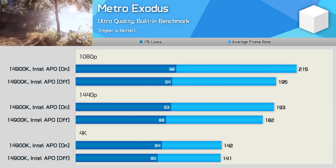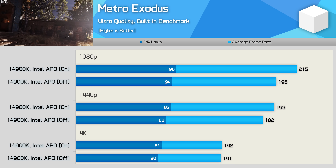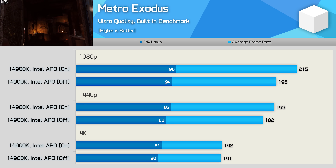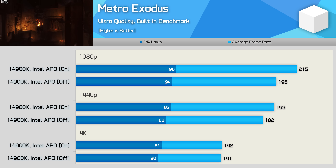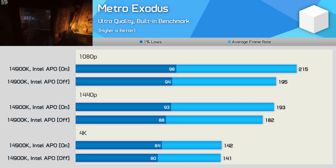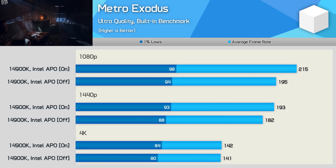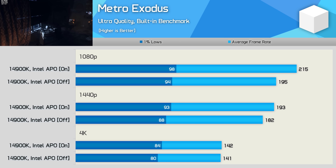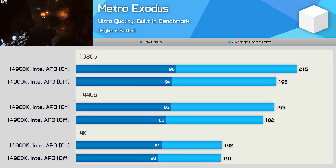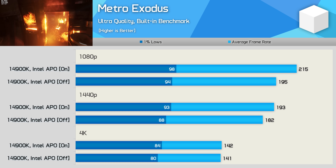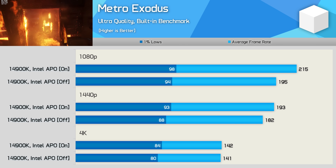First up, I tested Metro Exodus using the built-in benchmark with ultra quality settings, as this is typically how you'd play the game using a high-end GPU. At 1080p with APO on, we found a nice 10% performance uplift, taking us from 195 FPS to 215 FPS. Not exactly a dramatic difference, but it is free performance. Then at the more GPU-limited 1440p resolution, the margin was reduced to 6% — not amazing, but again it is free performance. Sadly, at 4K we are heavily GPU-limited, so additional CPU performance makes no difference.